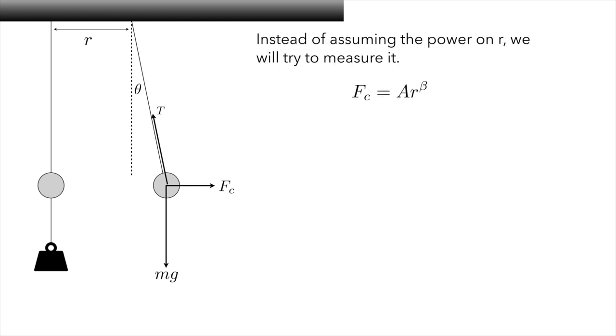Instead of assuming that the power in the Coulomb law is r to the negative two, we are actually going to try to measure it. So we're going to write down a force law that says that the Coulomb force is equal to a times r to some unknown power beta. Your lab manual works through the math, where we show that beta can be determined from two measurements of the angle and the separation. And the math for that gives us that beta is the ratio of these two logs here. So natural log of tan theta 1 over tan theta 2 divided by natural log of r1 over r2. So we'll just go ahead and measure these two quantities and form this ratio.